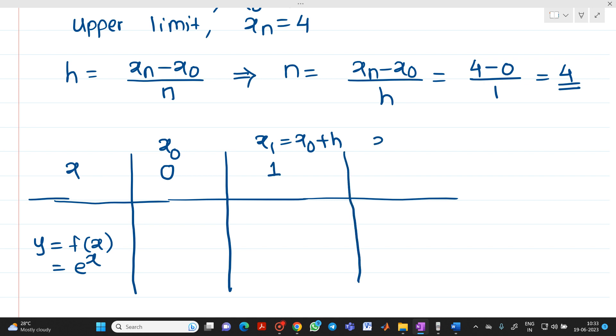Similarly, x2 will be x0 plus 2h, so 1 plus 1 equals 2. Then x3 will be x2 plus h which equals 3. And x4 will be 4. If you observe, n is the number of entries which is 4. So xn means up to x4.